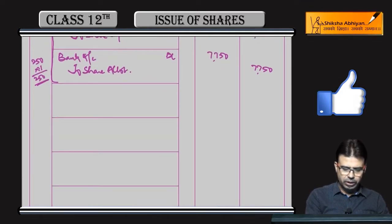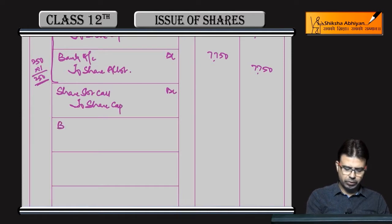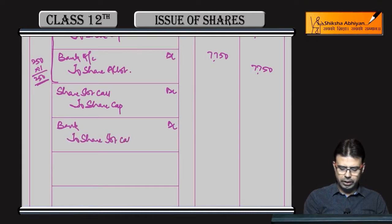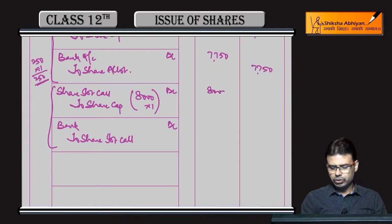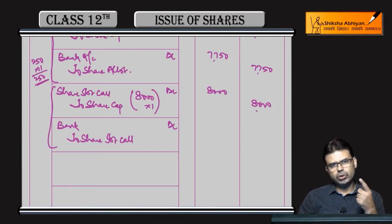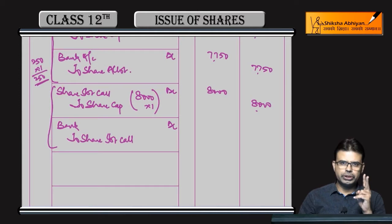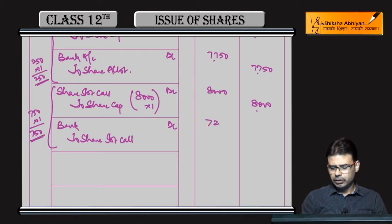Ab first call ki baari aati hai bacho. Share First Call debit — 2 Share Capital. Bank Account debit — 2 Share First Call. 8,000 shares × 1 rupee per share — call mangi 8,000 rupees. Ab 2 logon ne nahi diya: 250 shares jinhonn allotment par nahi diya — wo toh hain hi — plus 500 shares aur, jin par sirf 3 rupees aaye hain (sirf application aur allotment diya). To 750 shares × 1 rupee = 750 rupees nahi aaya. Baaki 7,250 hamein receive honge bacho.